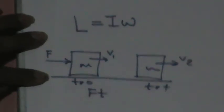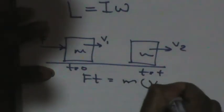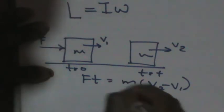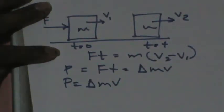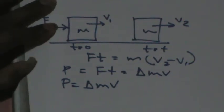Angular momentum is the product of the moment of inertia and the angular velocity of the object. Similar to translational motion where force F on mass M changes velocity from V1 to V2, giving impulse FT equals change in momentum M(V2 - V1). This is called momentum P.